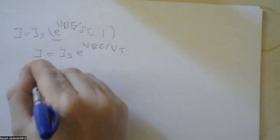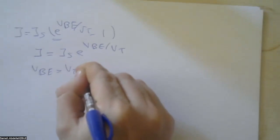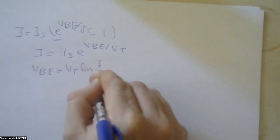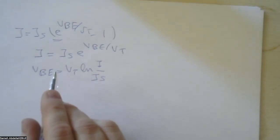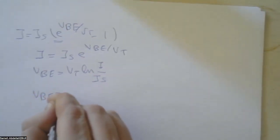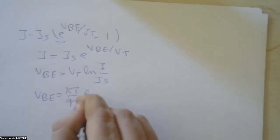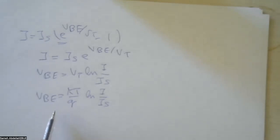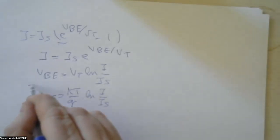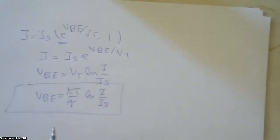Using this relation, we can rearrange to say VBE = VT · ln(I / IS). Please don't forget that this thermal voltage VT equals kT/q, leading to VBE = (kT/q) · ln(I / IS), where k is Boltzmann's constant, T is temperature in Kelvin, and q is the electron charge of 1.6 × 10⁻¹⁹ Coulombs. Here, I is the current through the diode and IS is the saturation current.